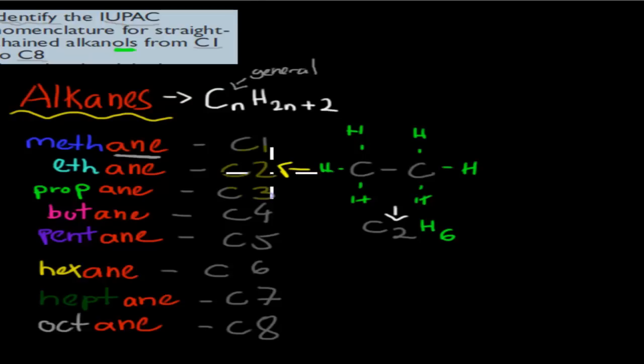So for example, if we put that C2, so instead of that n we have 2 here, that means if you have 2 carbons, you have 2 hydrogens times 2, so 2 times 2 plus 2, which is 6.